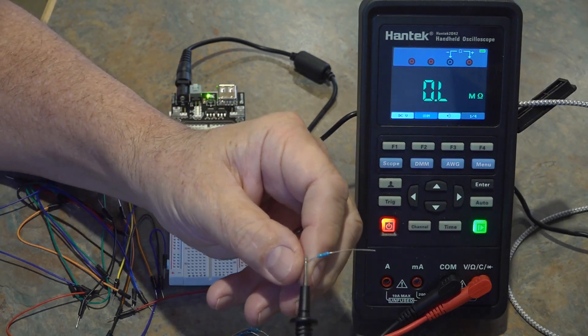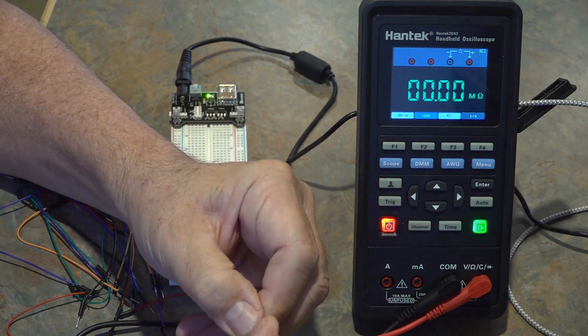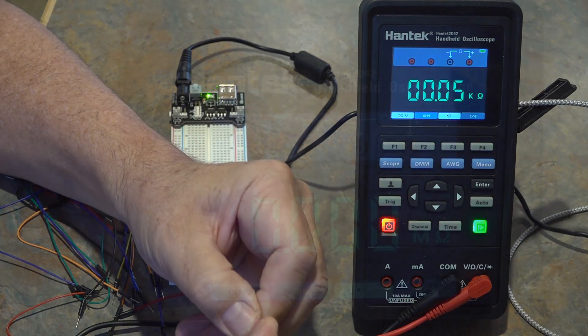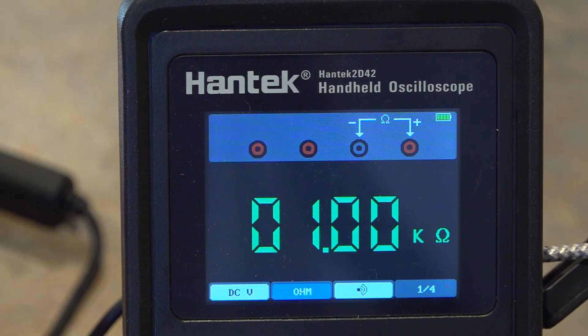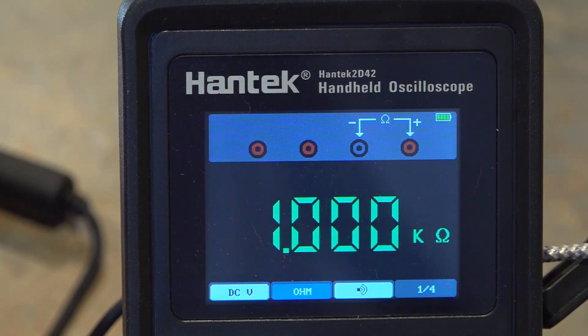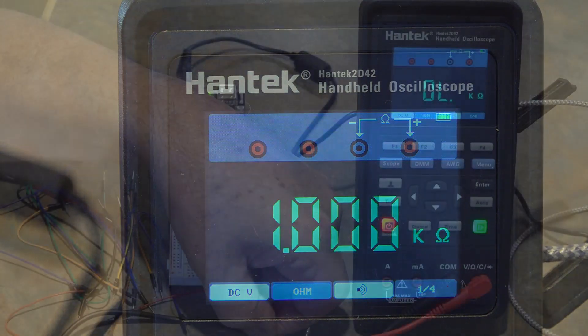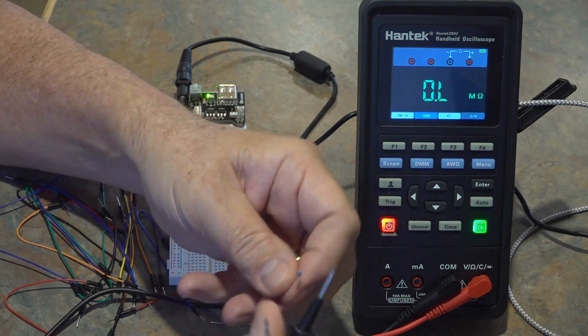So I'll take this first resistor, put it across the two leads to get its value and that's the 1k or the 1,000 ohm resistor and it's pretty accurate, 1,000 ohms that's actually quite good. Alright I'll try the next resistor.